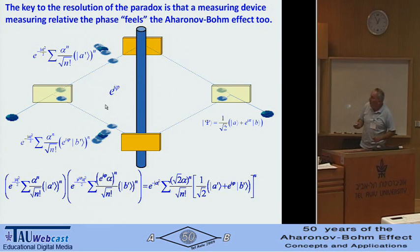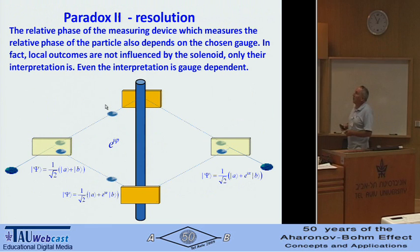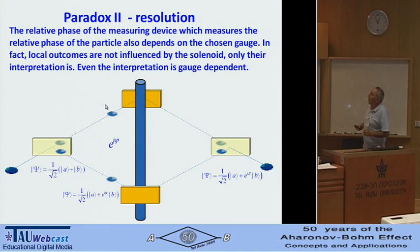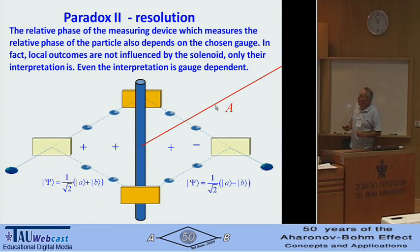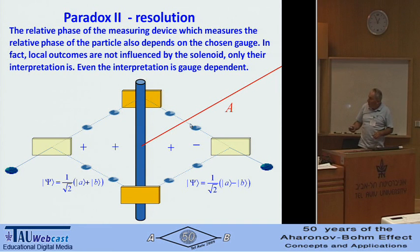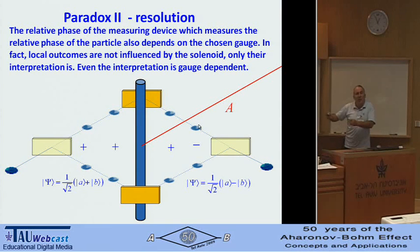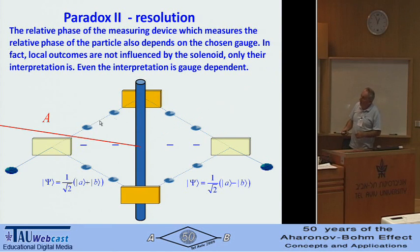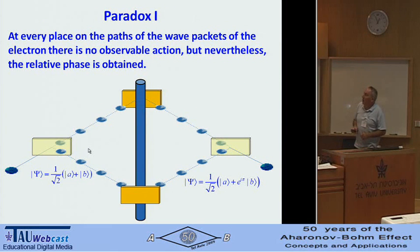Paradox Two is resolved. The relative phase of the measuring device which measures the relative phase of the particle also depends on the chosen gauge. In fact, local outcomes are not influenced by the solenoid — only their interpretation, and even the interpretation is gauge-dependent. With one gauge, nothing happens until a certain point, so our measuring device and particle don't change phase. With the measuring device changing its relative phase between parts, the same correlation tells us the phase is minus — and this is correct. So Paradox Two is resolved, but Paradox One remains intact: at every place on the path of the wave packet, there is no observable action, yet the relative phase is obtained.